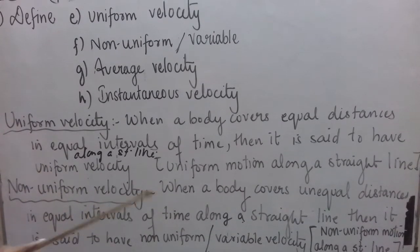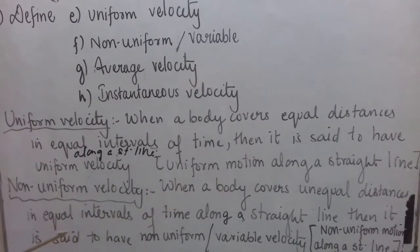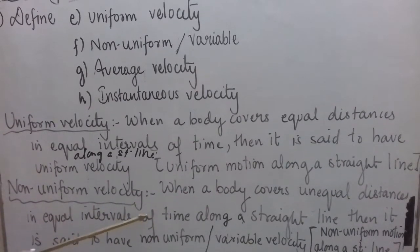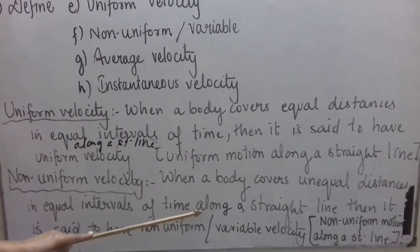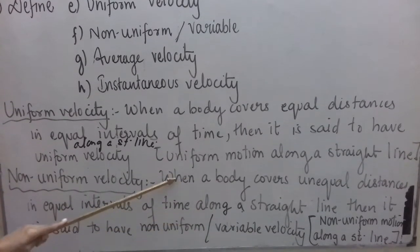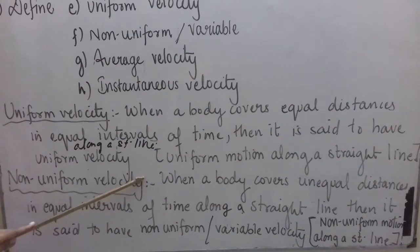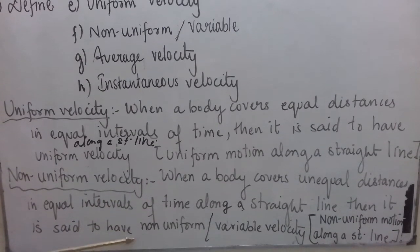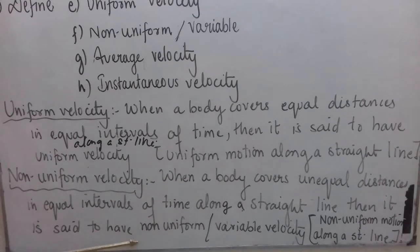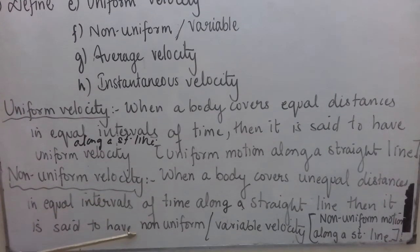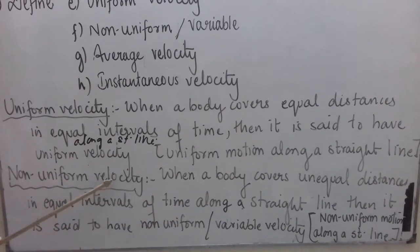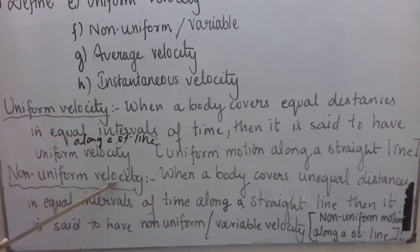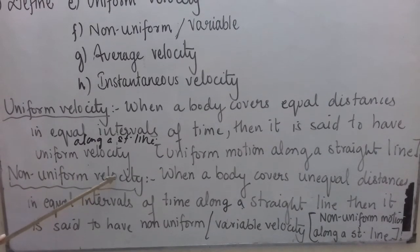When a body covers unequal distances in equal intervals of time along a straight line, then it is said to have non-uniform or variable velocity. Here I have used 'along a straight line' because in the ninth class syllabus, motion is generally taken along a straight line, meaning we are considering that direction is not changing — only the magnitude of velocity is changing. But remember, velocity can also change due to a change in its direction.